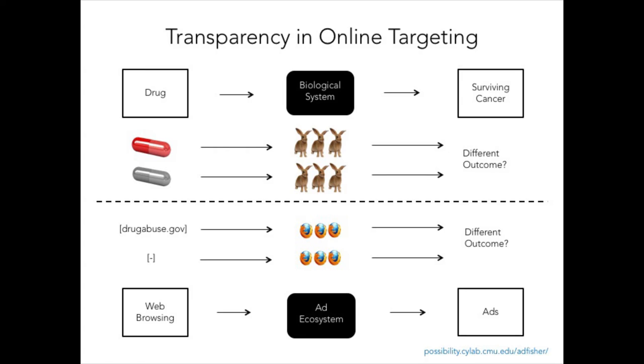We apply the same methods to study the Google Ad system, wherein we want to find out if web browsing activities have any effect on the ads that get served later on. The only difference is that instead of bunnies, we now have browser instances; instead of drugs, we have website visits; and instead of survival rates, we are measuring the ads. Turns out, visiting websites about substance abuse significantly increases the number of ads that you get about rehabs, which is very concerning. We also found evidence suggestive of discrimination, wherein simulated women received far fewer ads from a career coaching service promising high-paying, executive-level jobs than their male counterparts. This is an example of an algorithm propagating the existing gender pay gap.